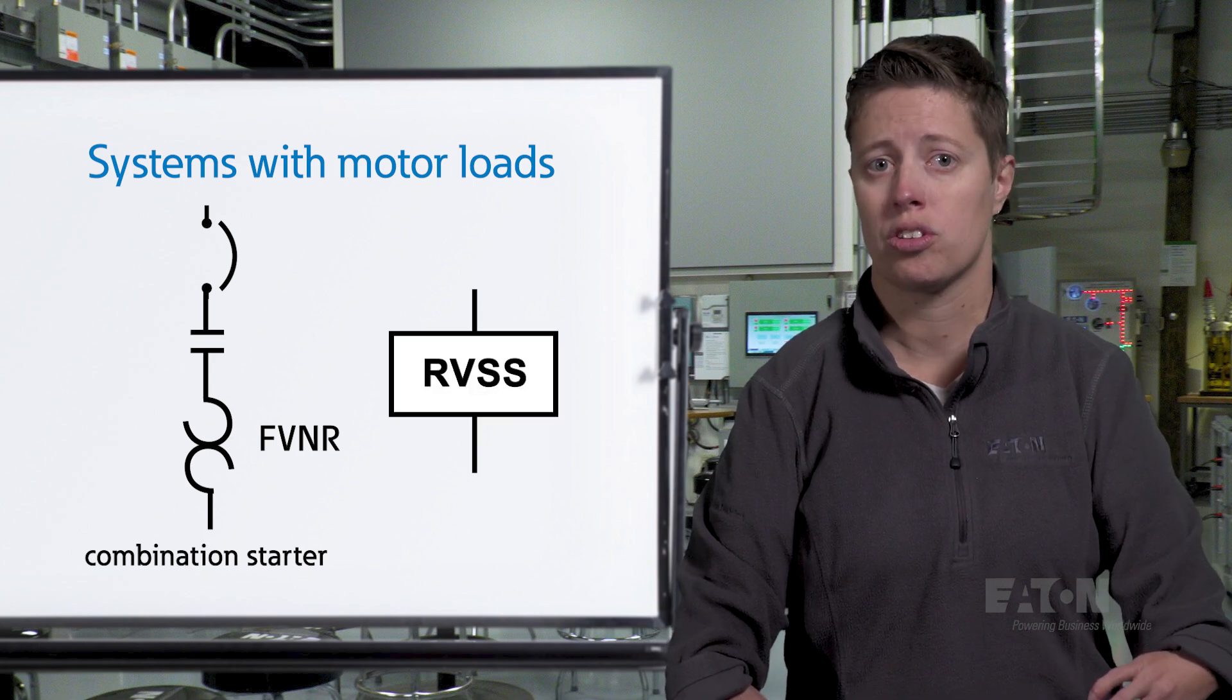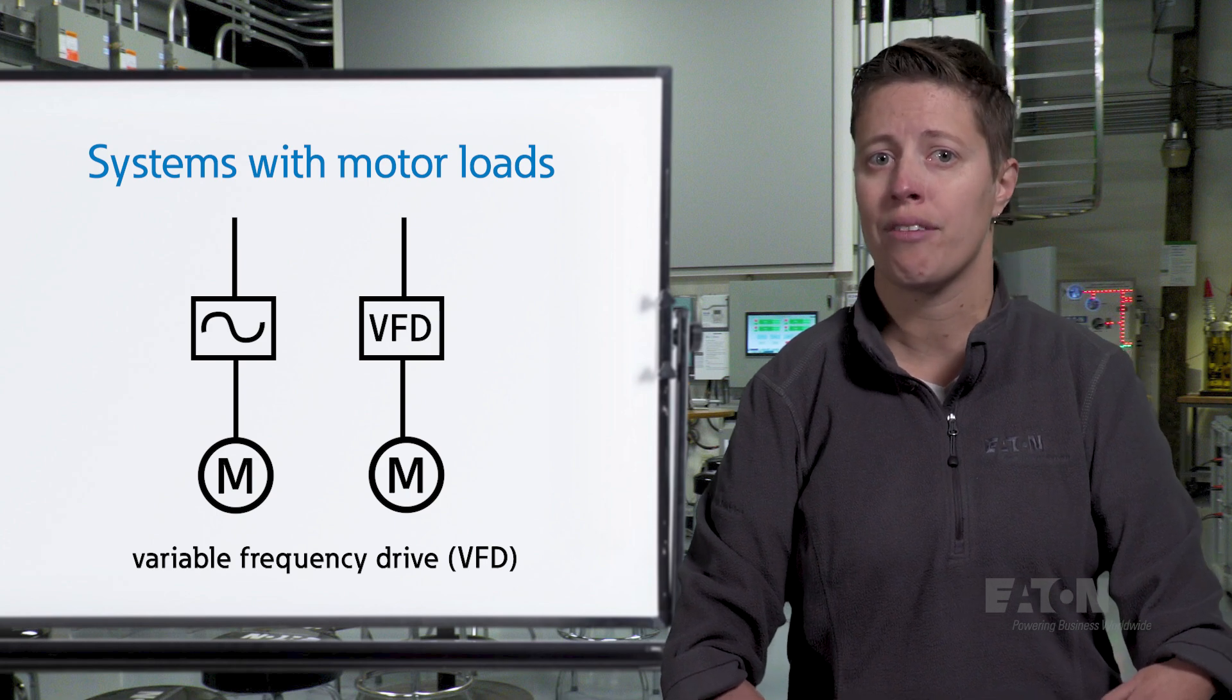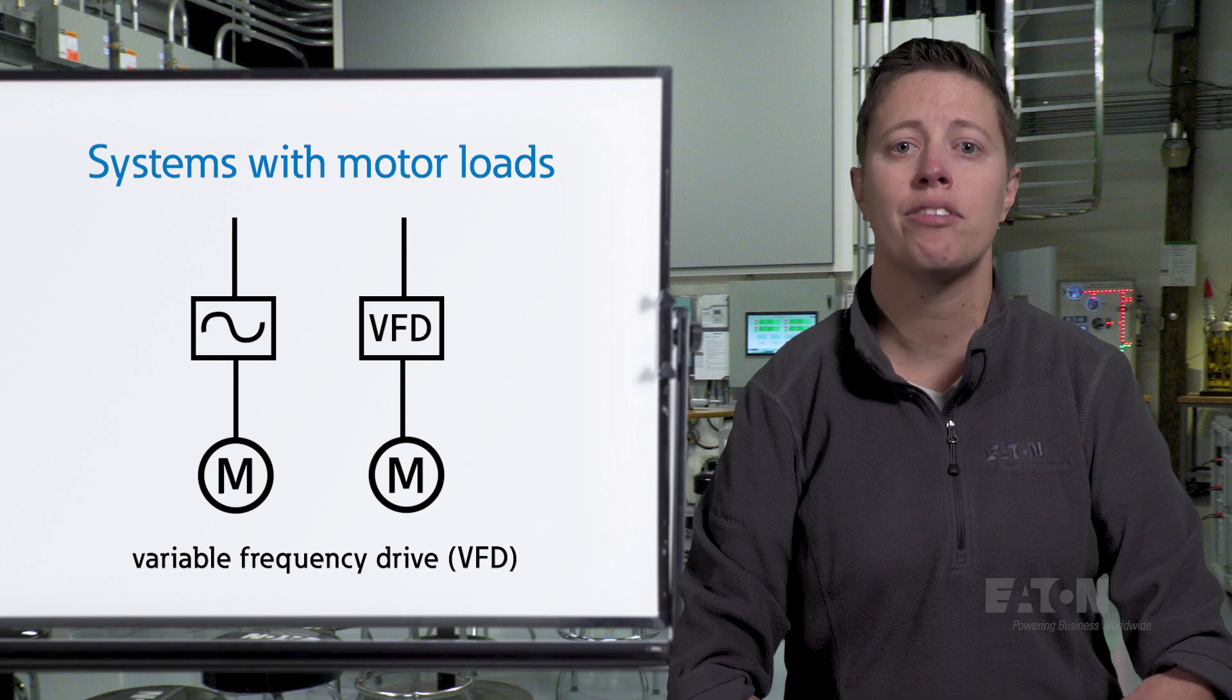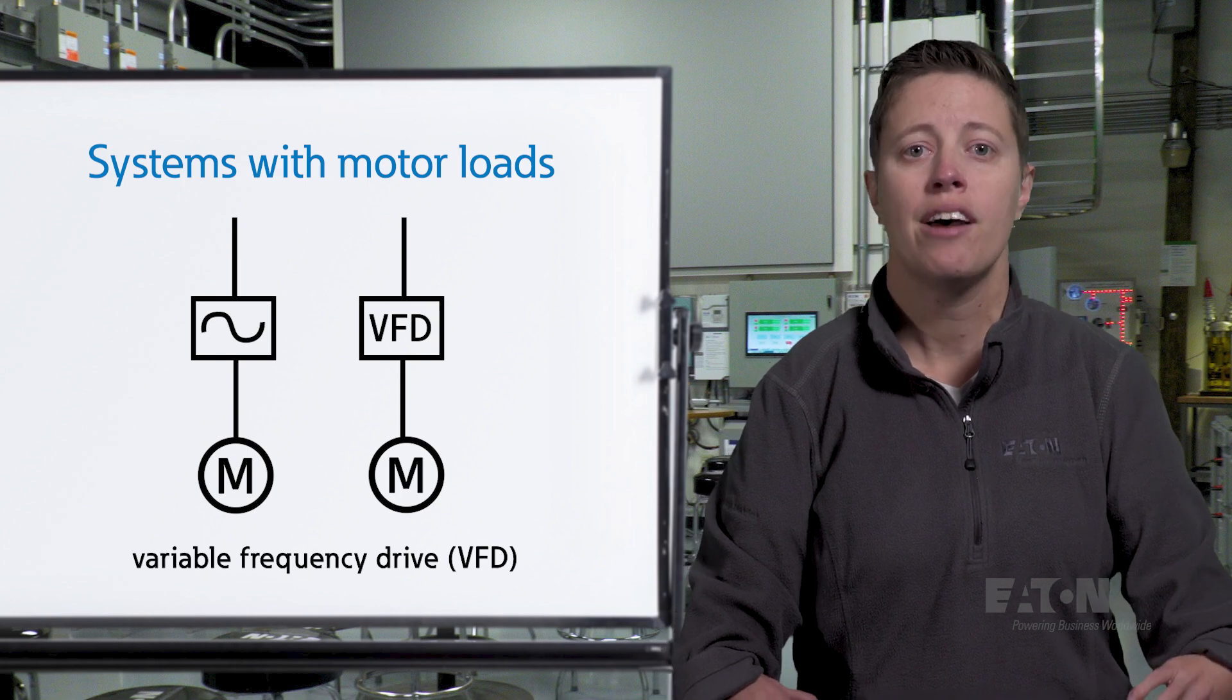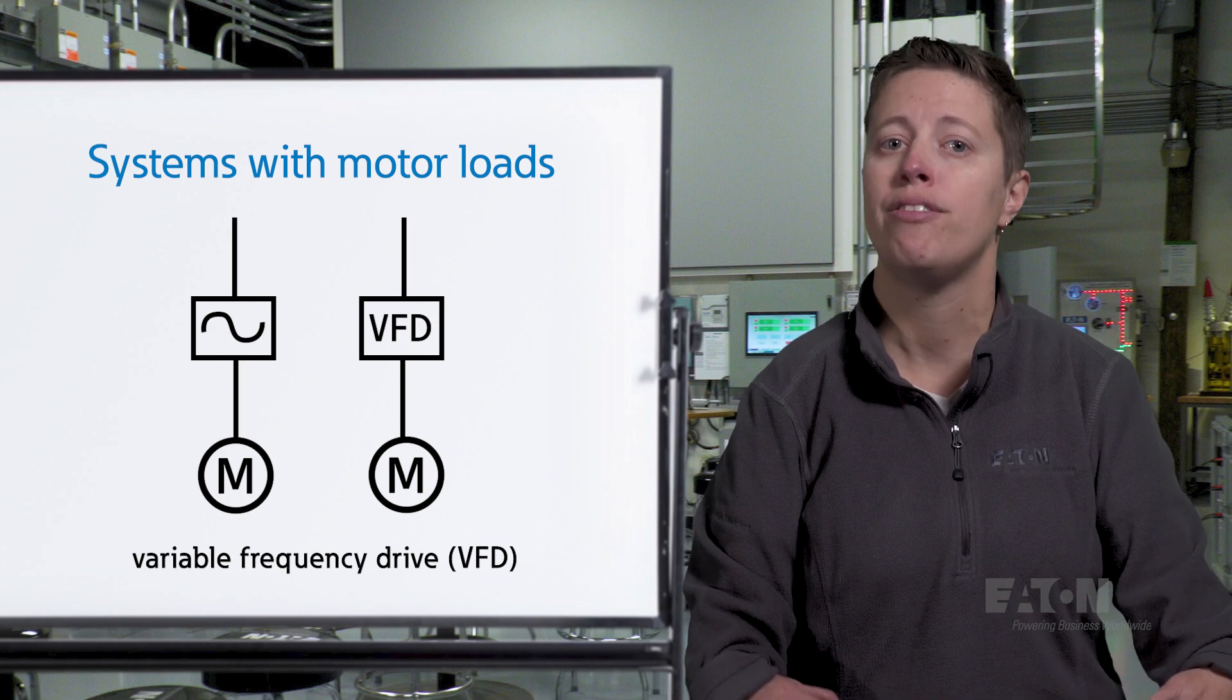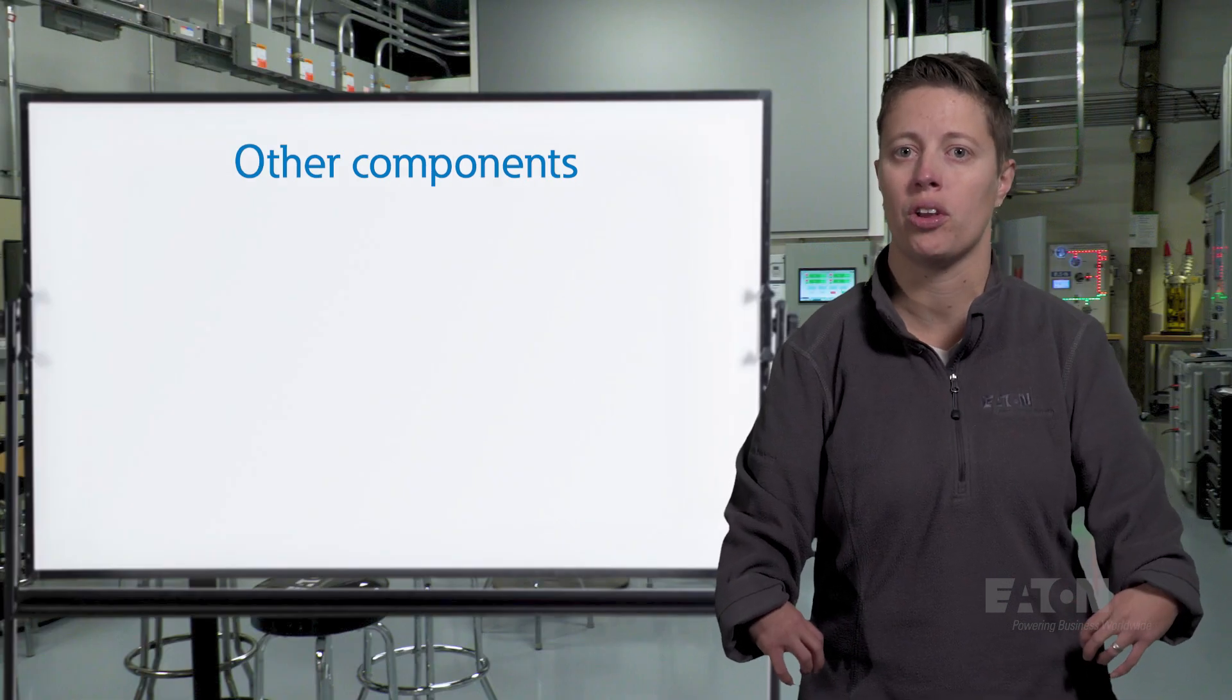For reduced voltage starting, you may see the abbreviation RVSS. You may also find a variable frequency drive, or VFD, on the single line. This symbol is often a rectangle with a wave symbol inside, or the letters VFD. A VFD is a device that controls the speed and torque of an electric motor by varying the frequency and voltage of its power supply. There are also some additional components we should be on the lookout for.